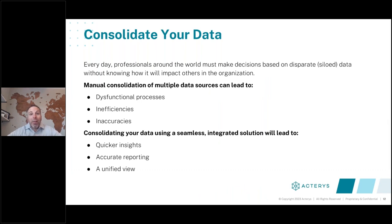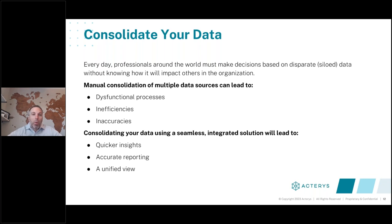We first start by consolidating the data. We have to integrate with all these different source systems and centralize everything in a single source of truth — HR systems, CRM solutions, finance systems, among others. When we think about manual consolidation and what it leads to — dysfunctional processes, inefficiencies, inaccuracies in data — consolidation done seamlessly brings quicker insights. Now that your data is in one place and you have trust in that data, you can make quicker decisions, you have accurate reporting, and more of a unified view. If you can see everything across the organization, you can make those decisions in a more accurate way.